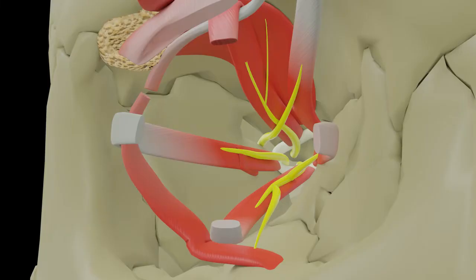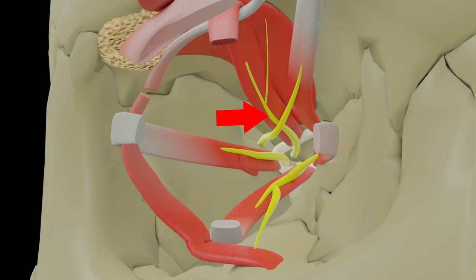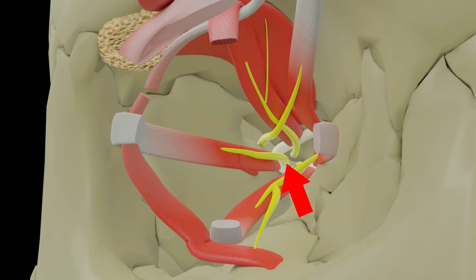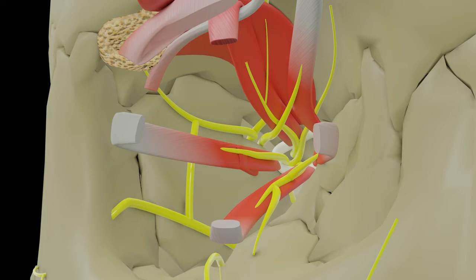The trochlear nerve enters through the lateral part and supplies the superior oblique muscle. The upper division of the oculomotor nerve supplies the superior rectus and levator palpebrae superioris, and the lower division supplies the medial rectus, inferior rectus, and inferior oblique. The abducent nerve enters through the middle part, lying inferolateral to the two divisions of the oculomotor nerve, and supplies the lateral rectus.